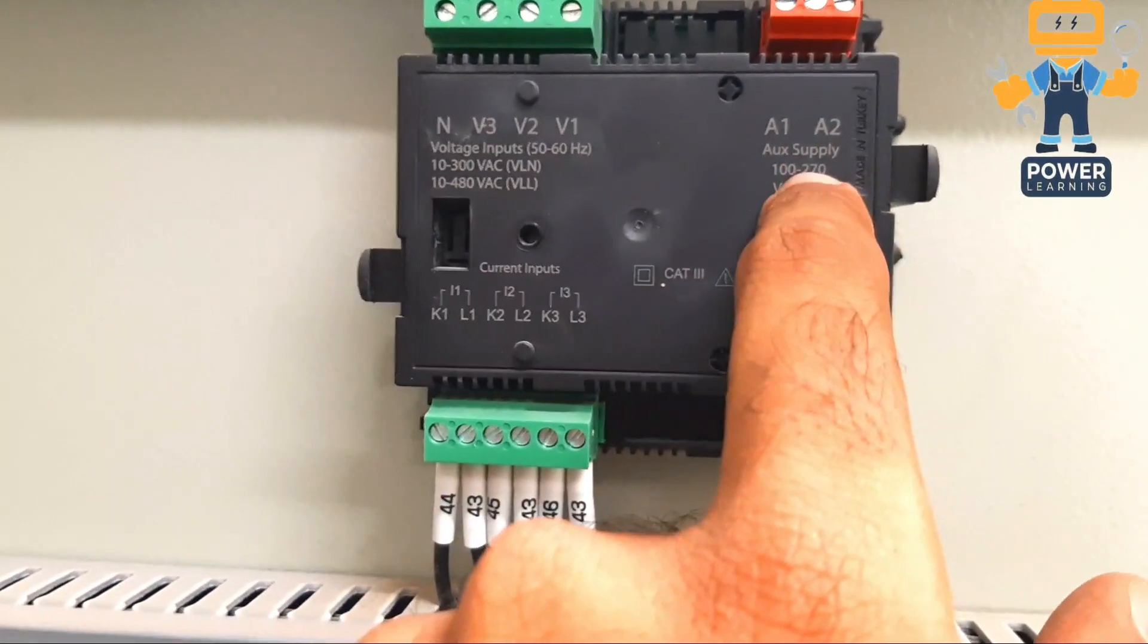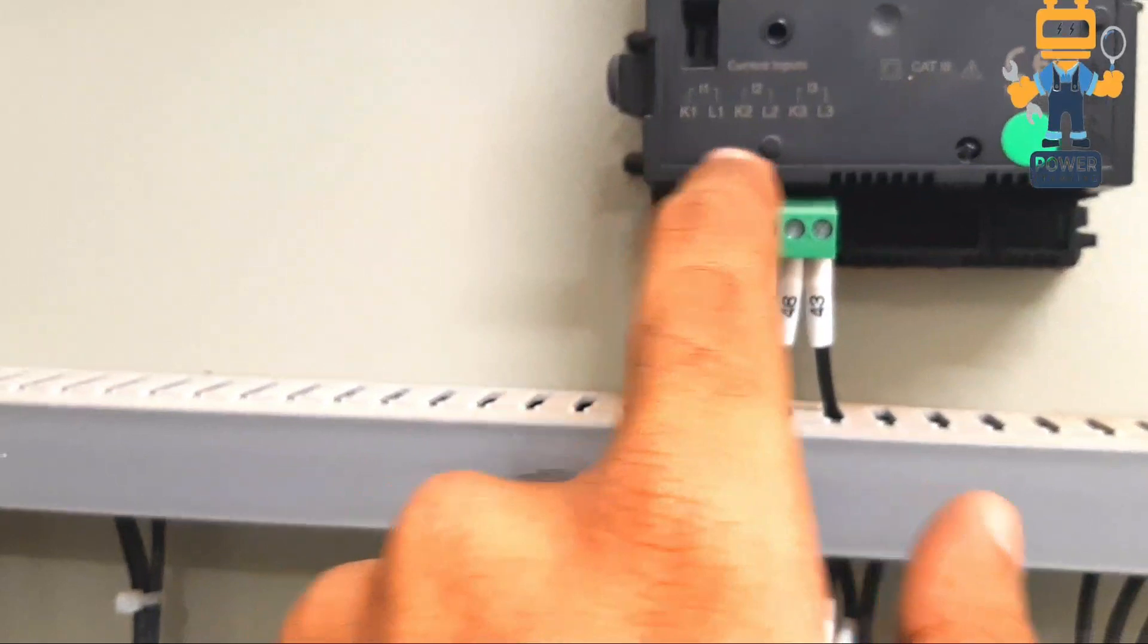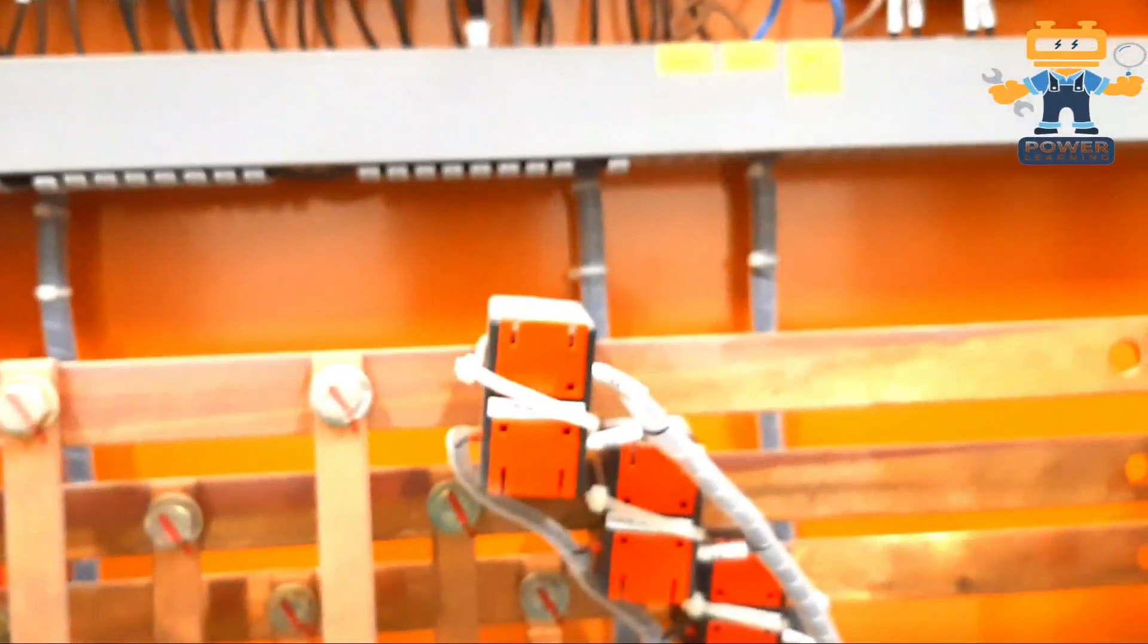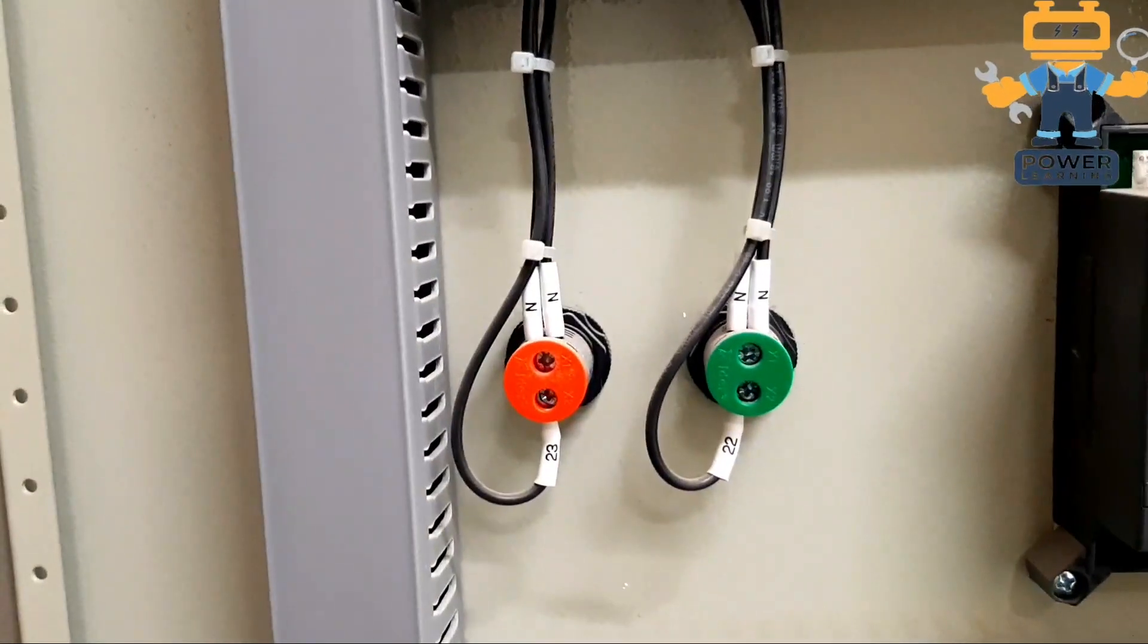Here we have 220 volt supply, auxiliary supply for the meter. Here we have three CTs connection, total six wires from the three CTs. As you see, 4443. Here we have two indications as I showed you from the front panel.